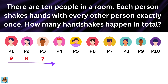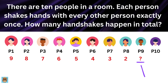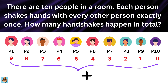Do you see the pattern? Here's how the numbers look: Person 1 shakes hands with nine people, Person 2 with eight, Person 3 with seven, Person 4 with six, and so on, until Person 9 shakes hands with just one person — Person 10. Person 10 doesn't shake hands with anyone new, because they have already shaken hands with everyone else. Now we add up all these handshakes: 9 + 8 + 7 + ... + 1 = 45. So there are 45 handshakes in total.